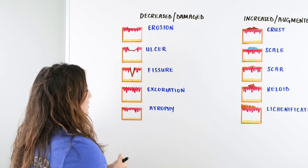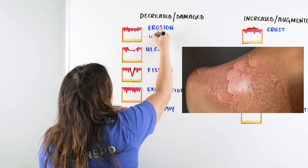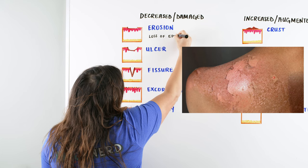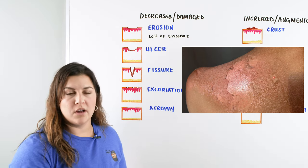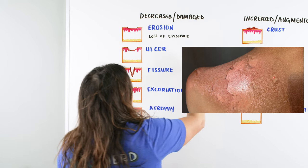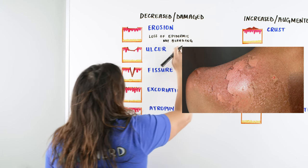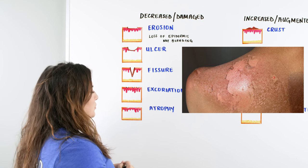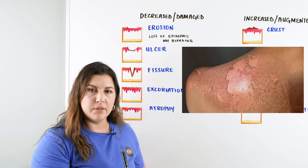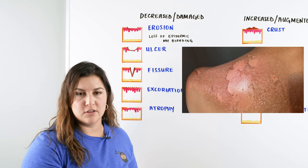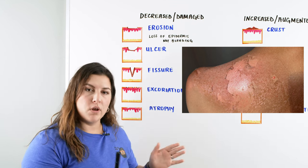Let's start off with the word erosion. When we're talking about a secondary lesion erosion, we're talking about the loss of the top layer — the loss of the epidermis. When we have that loss of the epidermis, we are not deep enough to go down into the dermis. So we're not having an issue with bleeding, but there will be some oozing. It's going to be not bleeding, but it could be wet, moist, but no blood coming out.